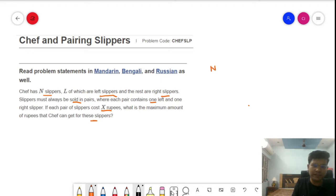So basically from the N slippers, L are the left slippers out from N, and the remaining will be the right slippers. We need to find the combination of left and right slippers such that we can sell those slippers in pair and we can get the maximum amount.